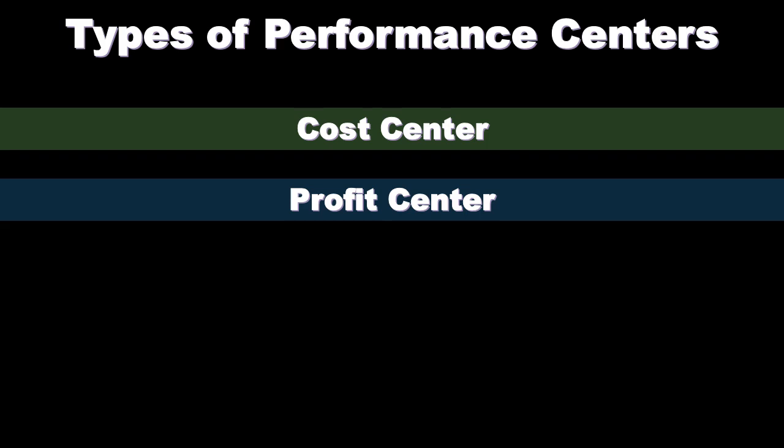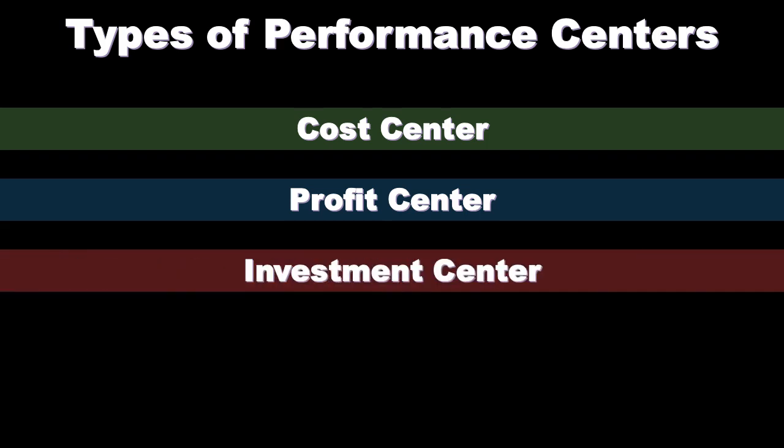We have the profit center, which will have a profit component as well as costs. The measurement tools for a profit center will include measurement of revenue generation over costs, so managers will have to control both revenue generation and the relevant costs they have control over in order to achieve the profit objective. Then we have investment centers, which are responsible for making appropriate investments and therefore managing costs.